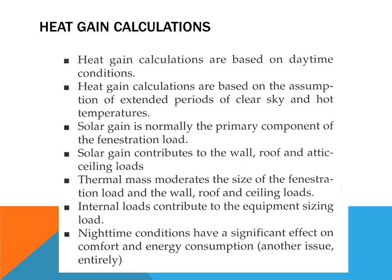When we look at heat gain calculations, there are many things we need to consider. Some are based on outdoor temperatures — specifically daytime conditions, because at nighttime there is usually no sun shining through the windows to add additional heat. But we do look at solar gain, which adds additional radiant heat we need to consider for sizing the air conditioning equipment. We also look at the thermal mass of the materials and fenestration loads, which result from the sun shining through windows, as well as loads based on the color of materials and how materials conduct heat.